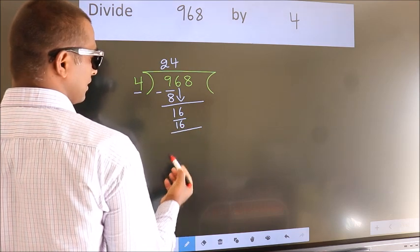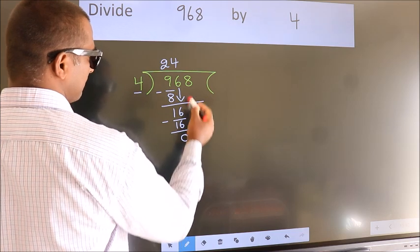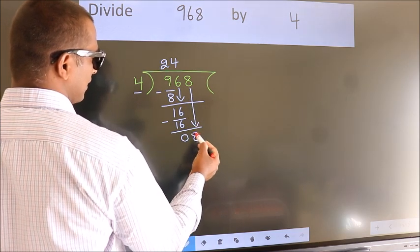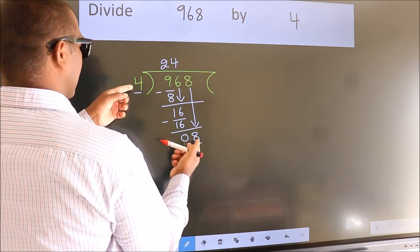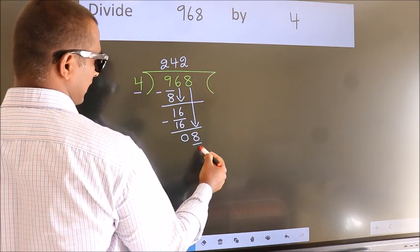Now, we subtract. We get 0. After this, bring down the beside number. So, 8 down. So, 8. When do we get 8? In 4 table. 4 twos, 8.